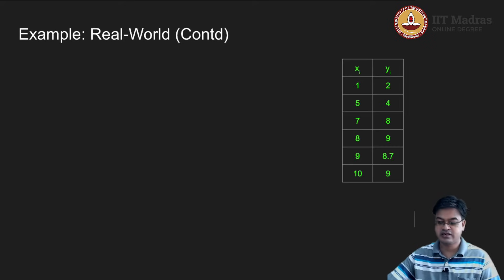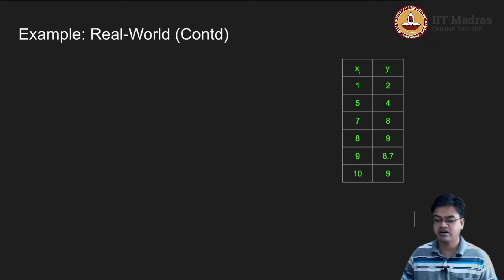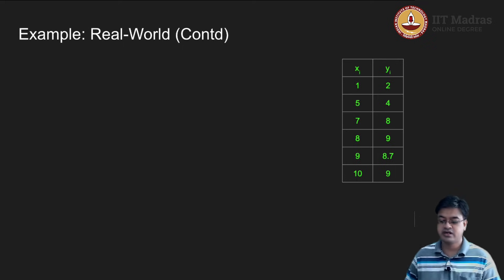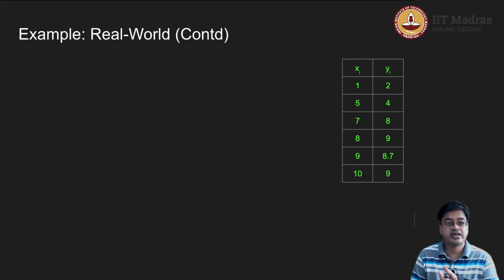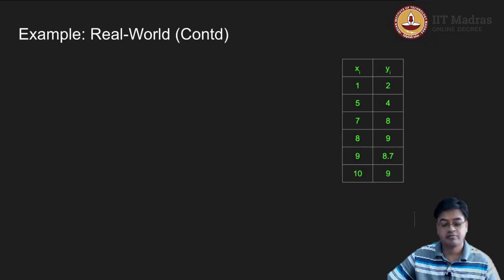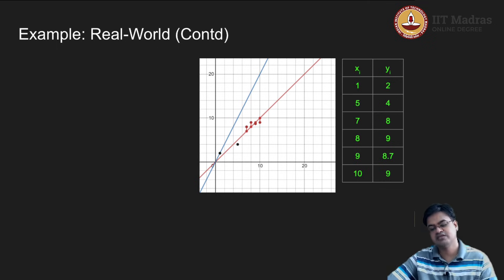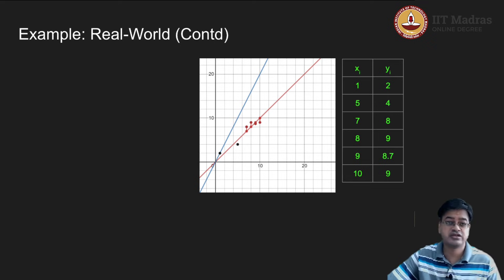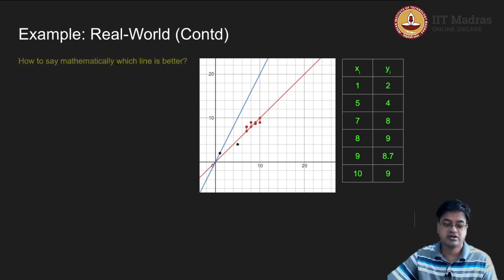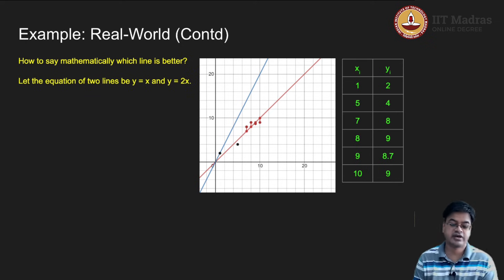Let us formalize this with the actual data. For 1 ampere you got 2 volts, for 5 amperes you got 4 volts, for 7 you got 8, for 8 you got 9, for 9 you got 8.7, and for 10 you got 9. There is no obvious direct relation, but something is making that line pass very close to all these points. Y = 2X seems way apart. Assuming the hypothesis given by the lab technician is correct, there are two lines: Y = X and Y = 2X, both passing through the origin.